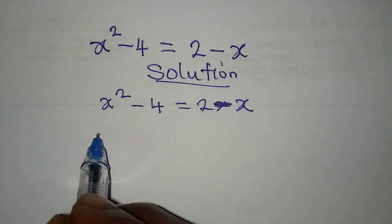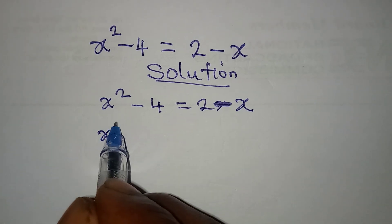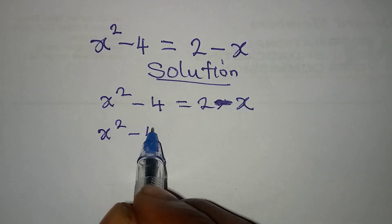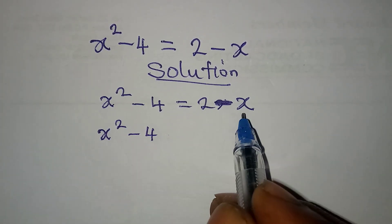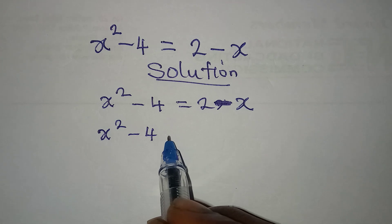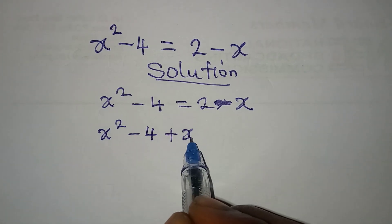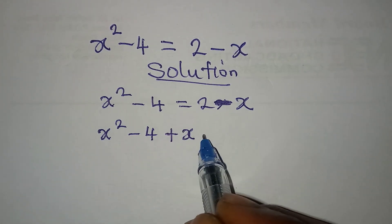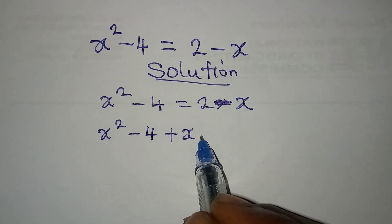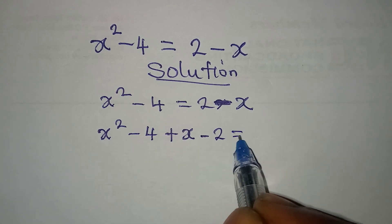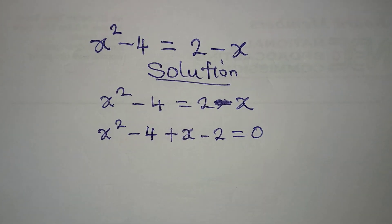So we are going to have x squared minus 4, then this becomes plus x, then this becomes minus 2, which will be equal to 0.